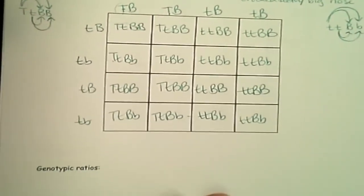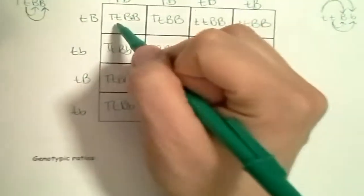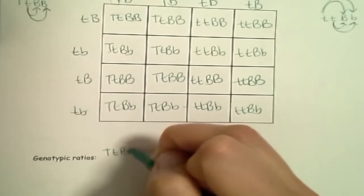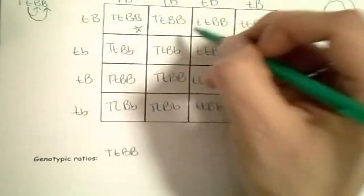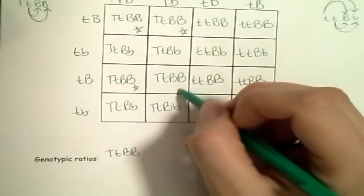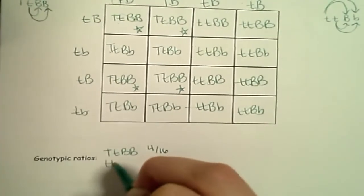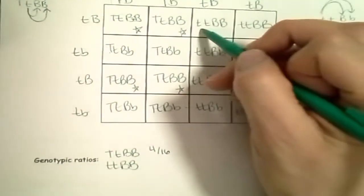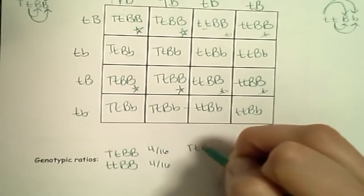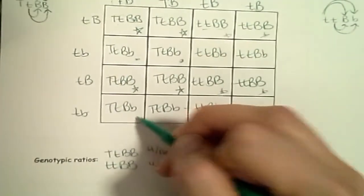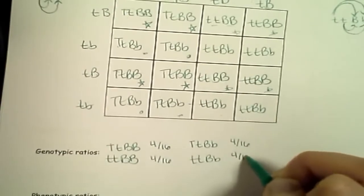Here are the answers. Now we need to figure out all the possible genotypes. Our first option: big T, little t, big B, big B — I count four of those, so four out of 16. Little t, little t, big B, big B — also four out of 16. Big T, little t, big B, little b — four out of 16. And the only option left: little t, little t, big B, little b — four out of 16 because that's all that's left.